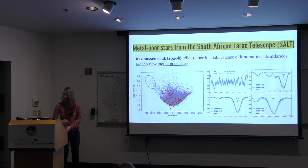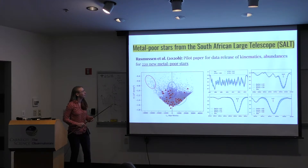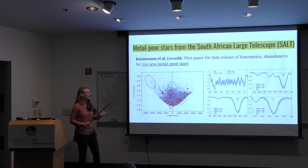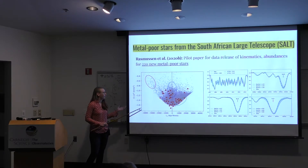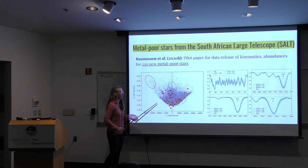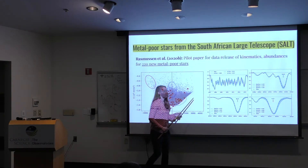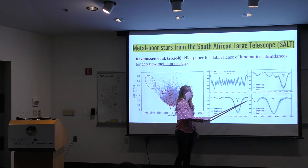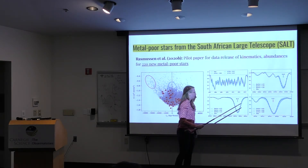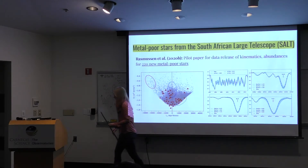I want to introduce my first paper: metal-poor stars from the South African Large Telescope. In this paper, we give a data release of kinematics and abundances for 220 metal-poor stars, which is quite a significant fraction of what is known today. On the left, we have a diagram of energy versus angular momentum, with the outer halo, the Gaia Sausage, and strongly bound disk stars highlighted. For those who work with SALT, here are examples of spectral feature quality: the carbon G-band, the main europium feature, barium, and strontium.